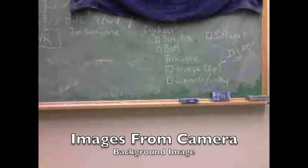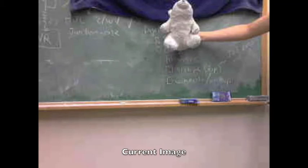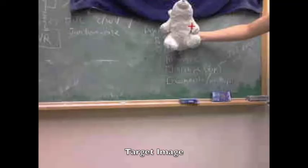To do basic object tracking, first we took a base frame, then we took its grayscale. Then we took the current image and its grayscale. We took the difference of the two, threshold of them, and then found the target.